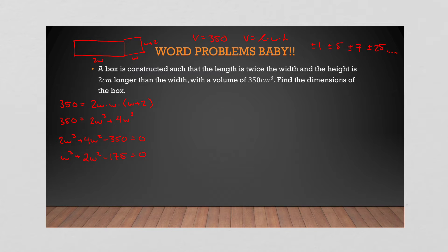We don't need to consider negatives because width is a length and can't be negative, so we only test positive values. If we test p(1), we get a remainder of −172 — that doesn't work. But when we do p(5), we get a remainder of 0.